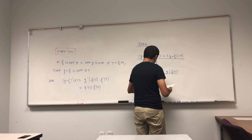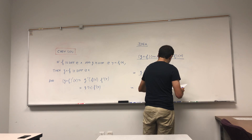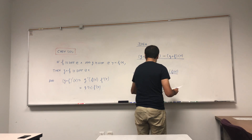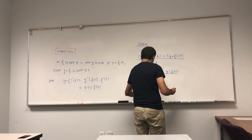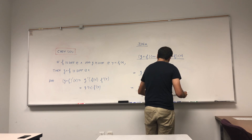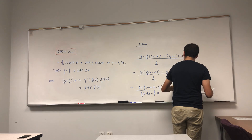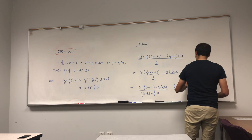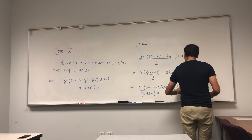This gives us g of f of x plus h minus g of f of x, divided by f of x plus h minus f of x, times f of x plus h minus f of x, divided by h.